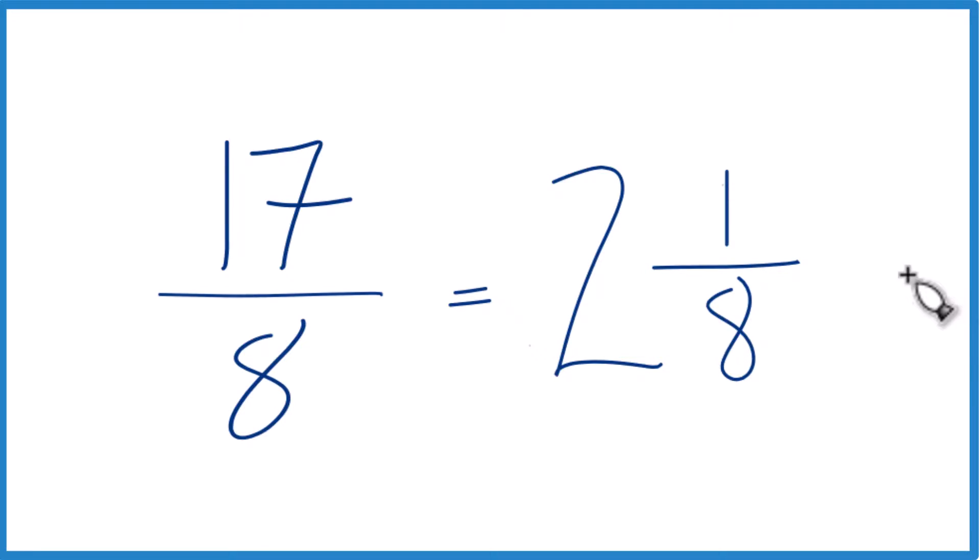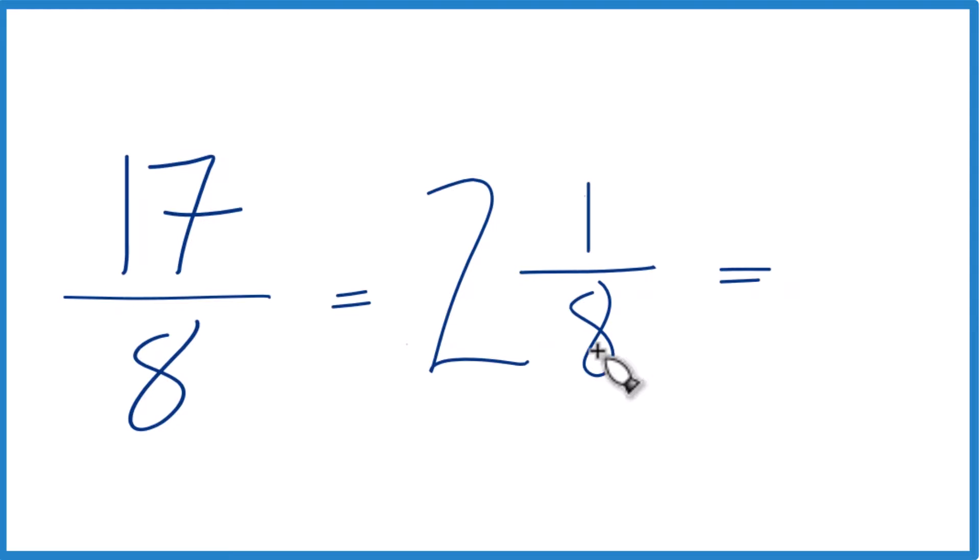And let's check that, make sure we got it. 2 times 8 is 16 plus 1. That's 17. Then we just bring the denominator here across, and we get 17 eighths. That's what we started with, so we know this is the correct mixed number for 17 eighths.